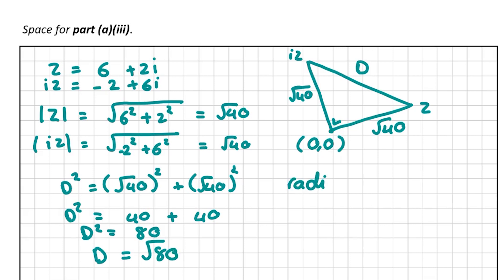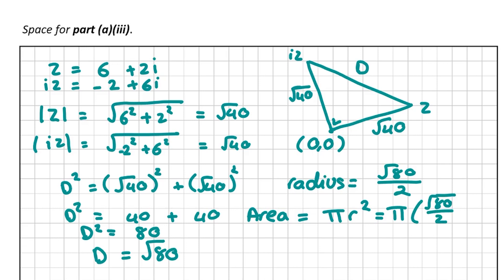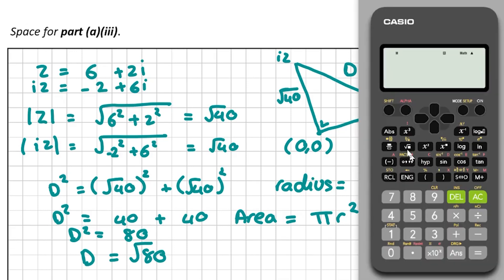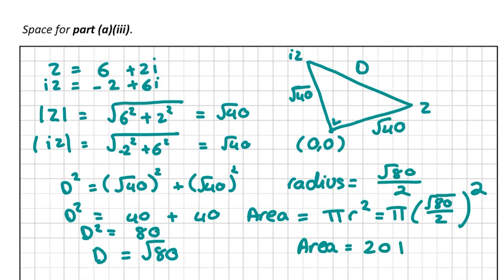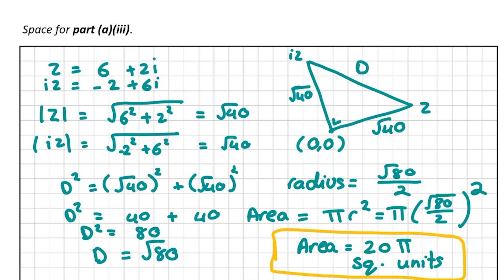The radius equals root 80 divided by 2. Now let's find the area: area equals pi r squared, so it's pi times root 80 over 2, all squared. Leaving pi out and computing root 80 divided by 2, squared, gives 20. So the area is 20 pi square units. For this question you get 5 marks for the correct answer.